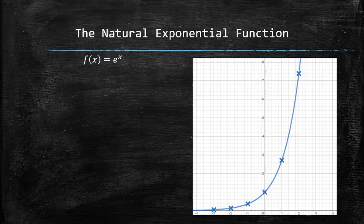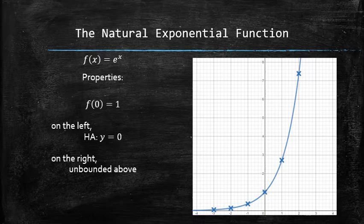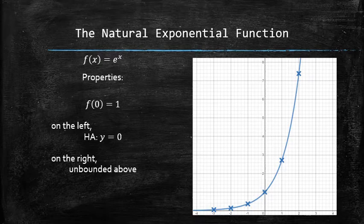Of course, the natural exponential function has the same properties as any other exponential function with base greater than 1. That is, the y-intercept is 1, on the left the graph approaches the x-axis, and on the right the graph goes up indefinitely.